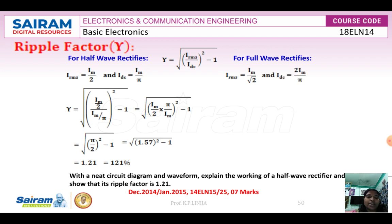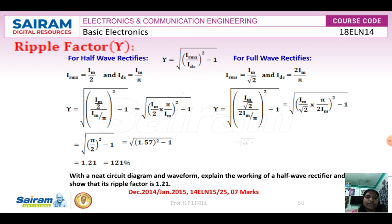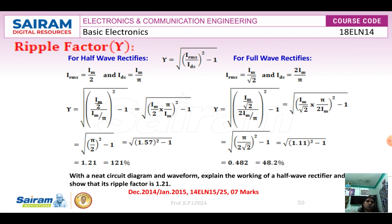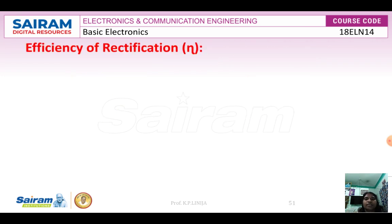For the full wave rectifier, the IRMS value is Im/√2 and IDC is 2Im/π. Therefore the ripple factor for the full wave rectifier is 0.482, that is 48.2%. In summary: the ripple factor for the half wave rectifier is 1.21, and for the full wave rectifier it is 0.482 or 48.2%.